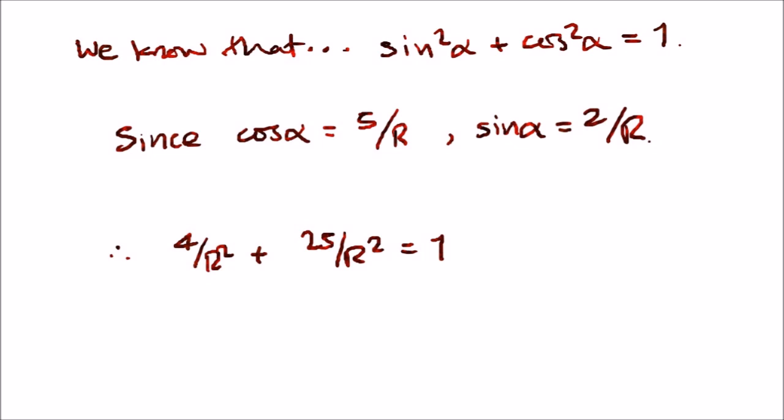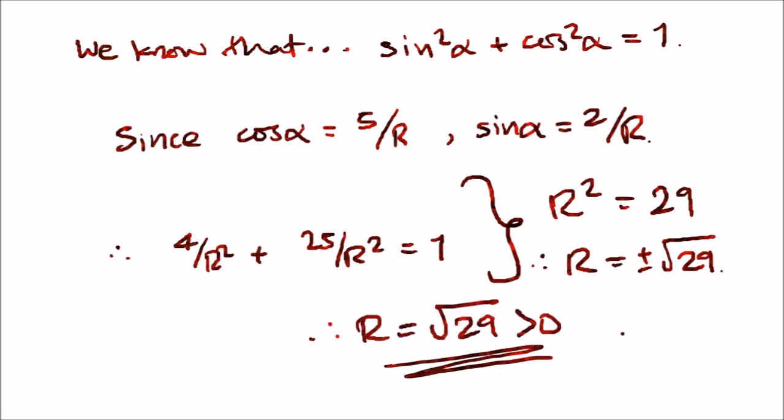Therefore, we should get r squared equals 29, and hence r equals plus minus root 29. If you remember from the question, it tells us that r has to be positive, so therefore the only positive answer is r equals root 29.